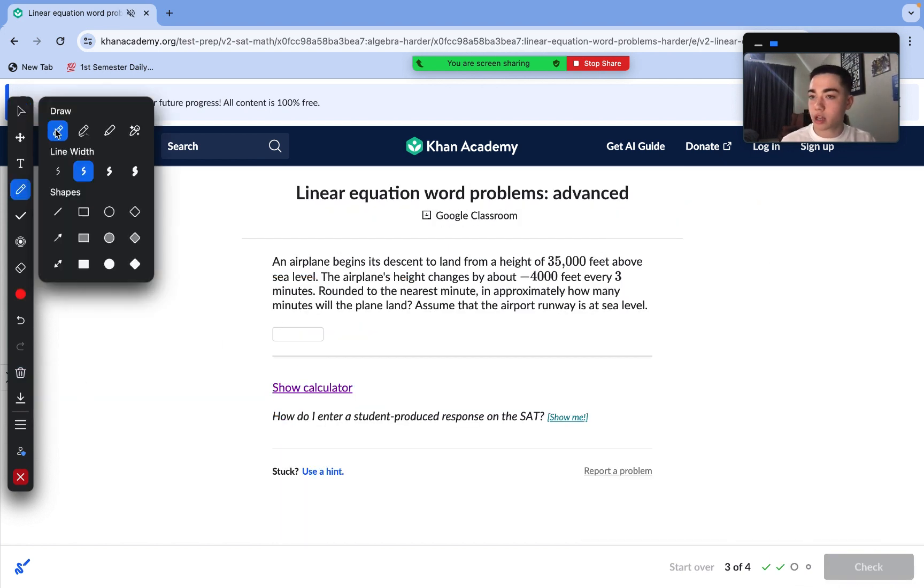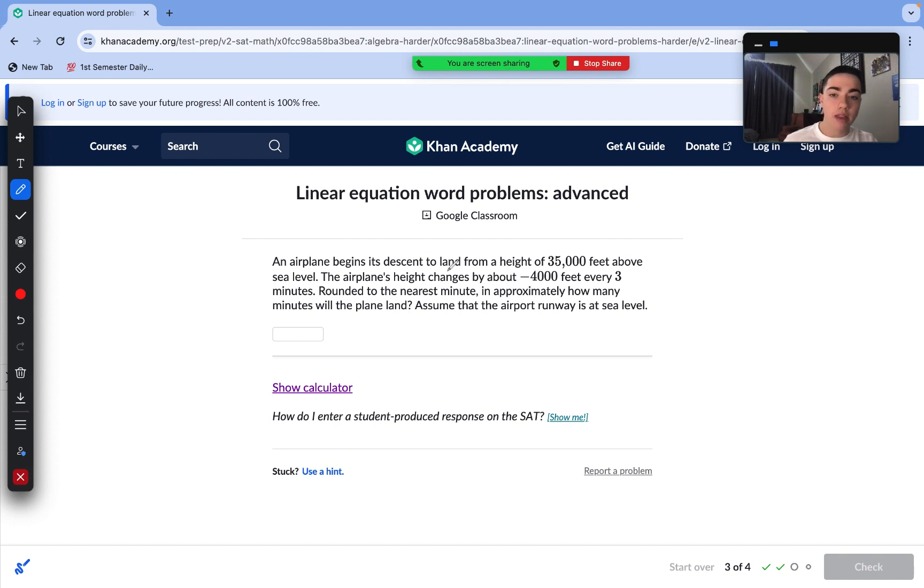Next question. An airplane begins its descent to land from a height of 35,000 feet above sea level. The airplane's height changes about minus 4,000 feet every three minutes. Around the nearest minute, approximately how many minutes will the plane land? Assume that the airport runway is at sea level.